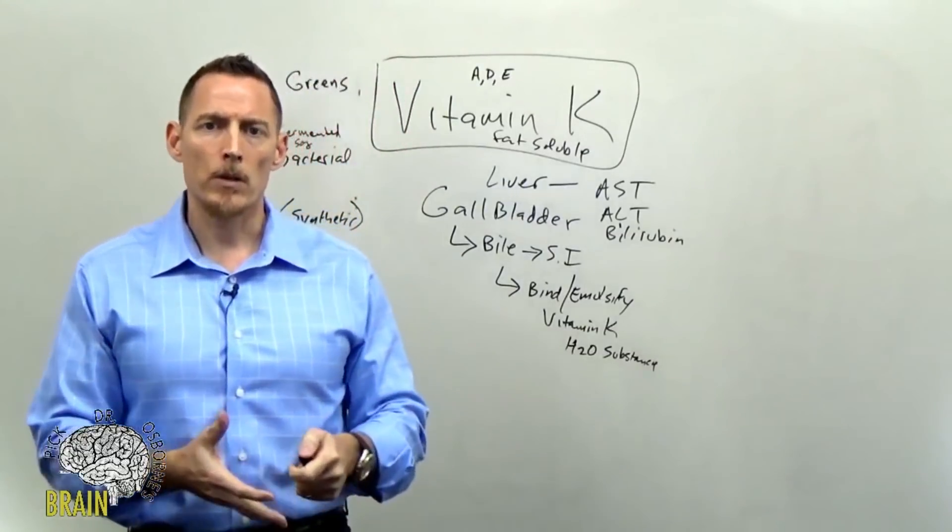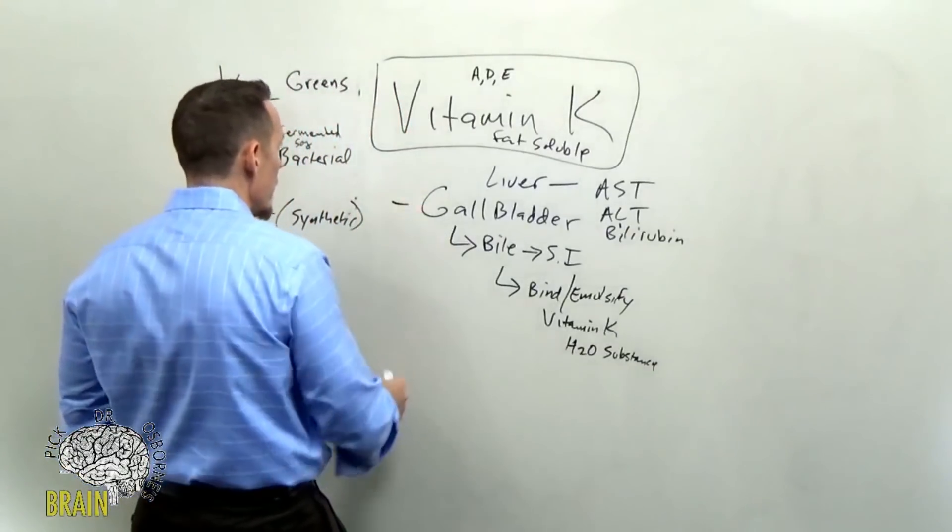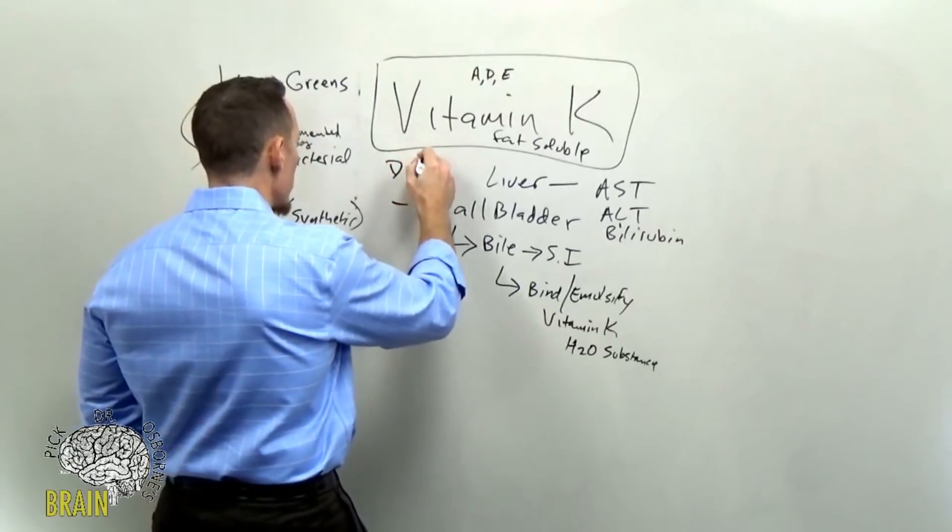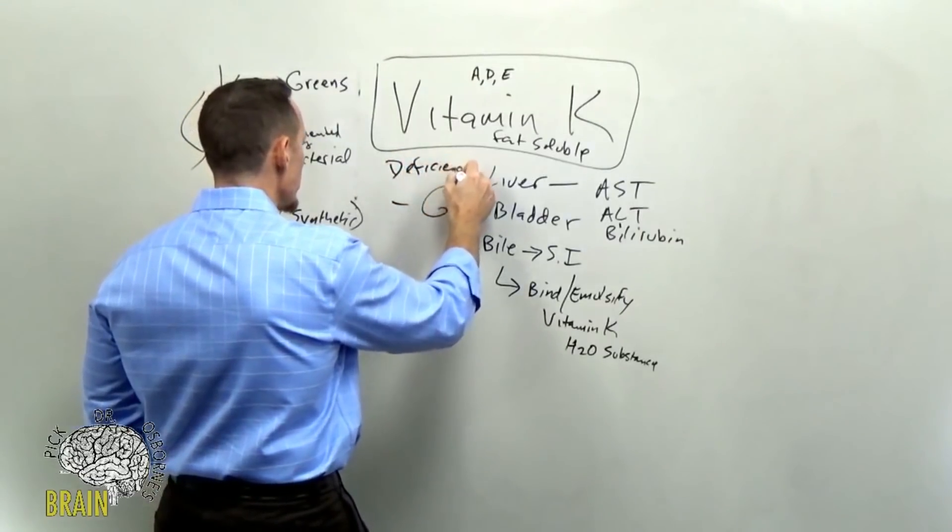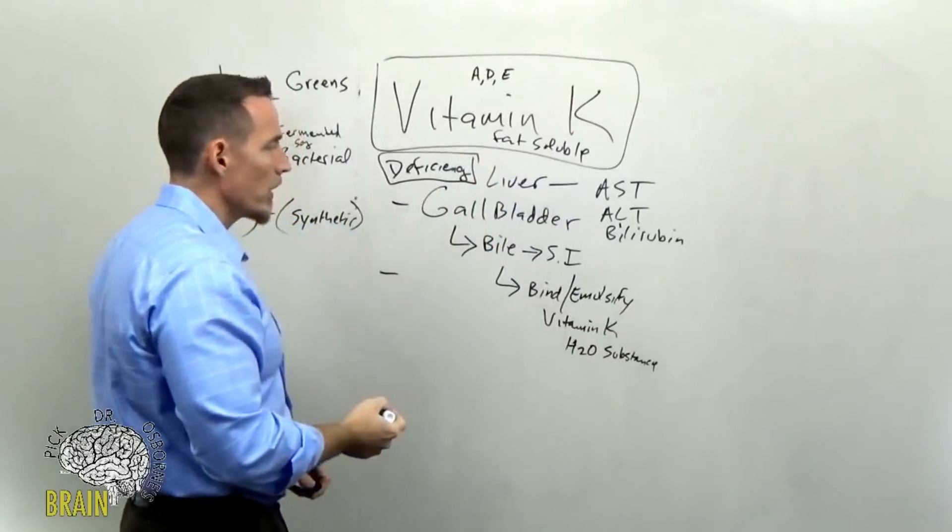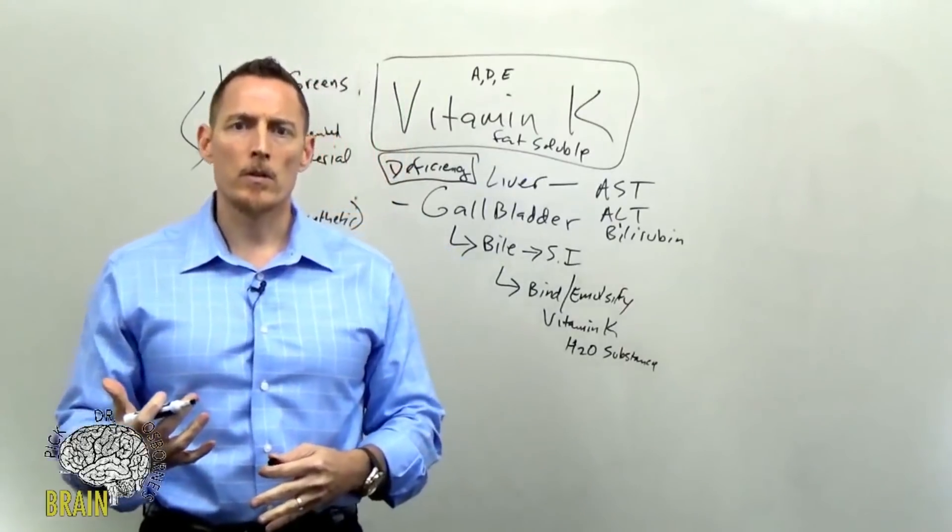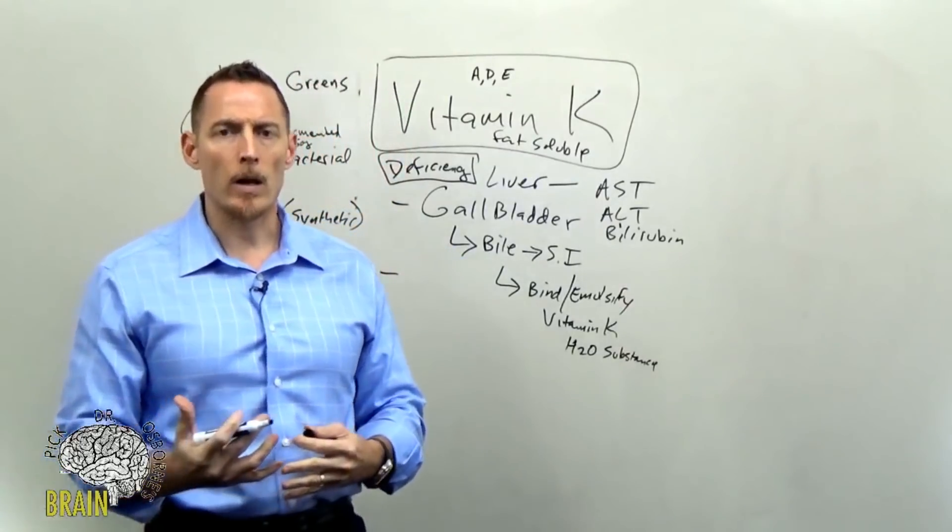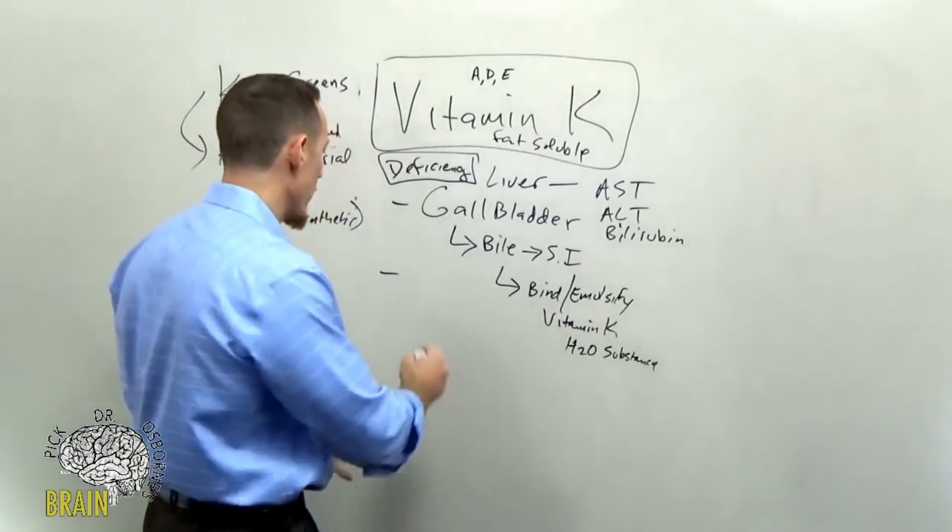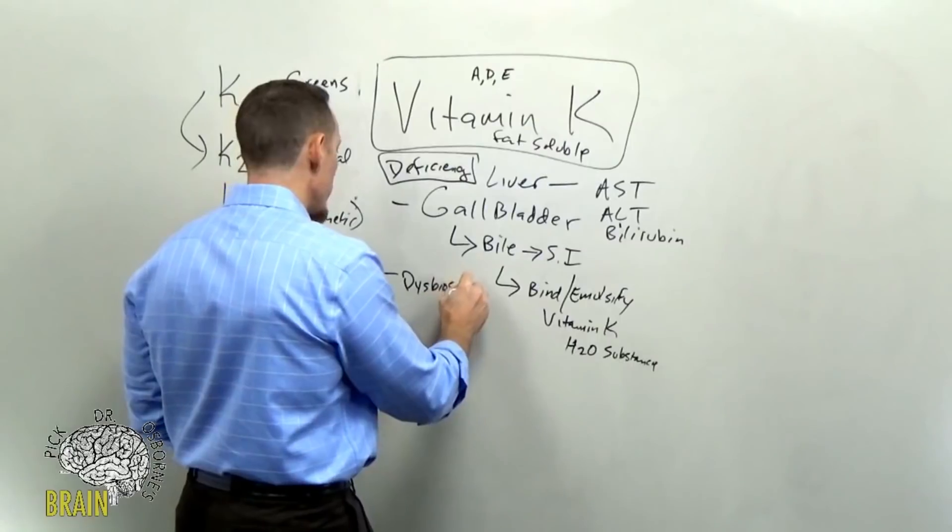Another thing that can cause vitamin K deficiency is, in a nutshell, dysbiosis. Dysbiosis is referring to abnormal bacteria or an imbalance in the bacteria that live in your GI tract. Remember what I said earlier: these bacteria, it's thought that the good bacteria in your gut produce about 50% of your daily vitamin K.